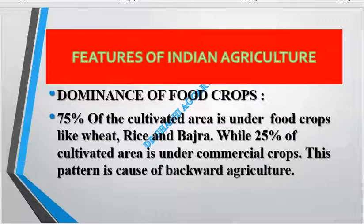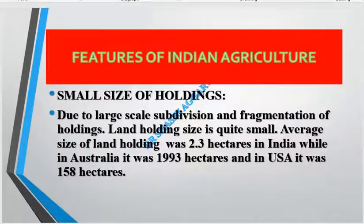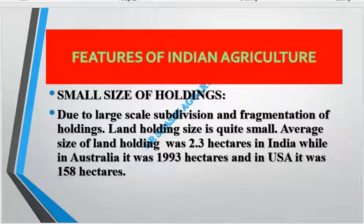This indicates that our agricultural economy is largely subsistence-based. The size of land holdings is very small, so farmers don't use modern equipment. Due to large-scale subdivision and fragmentation, there are many small holdings. The average holding size is 2.3 hectares in India, compared to 1,990 hectares in Australia and 158 hectares in the USA.